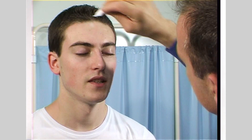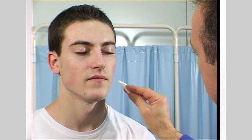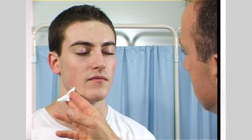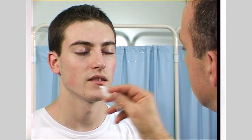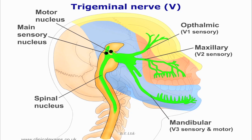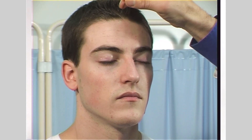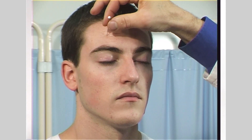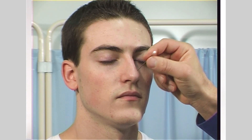Now assess the sensory component of the trigeminal nerve. Test with light touch and pin prick. You should also test for temperature sensation if necessary. Ensure that you cover all the areas in the distribution of the ophthalmic, maxillary, and mandibular divisions. Test for sharp and dull sensations using the sharp but occasionally substituting the blunt end of the pin.